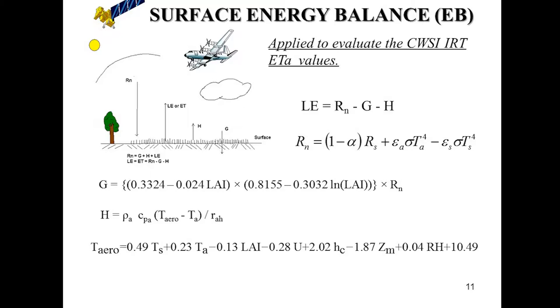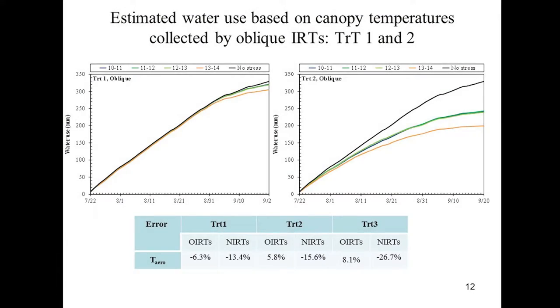Kendall also mentioned that even the non-stress, fully irrigated plot shows some stress from time to time. Depending on the time of day, you could get a different amount of water computed. Tom Trout also mentioned yesterday that depending on the time of day you measure, you'll get a different stress value, so you have to decide which is most representative. Here is the stress with oblique IRT; the black line is the upper envelope for no-stress, from the reference evapotranspiration and crop coefficient.